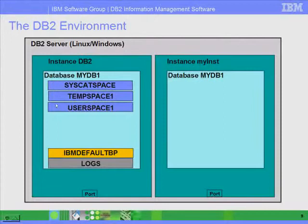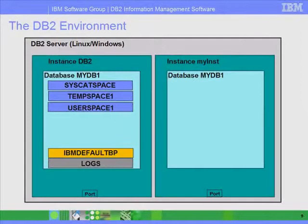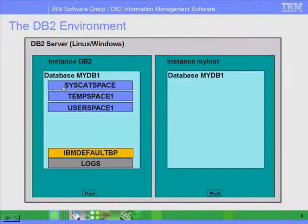There are three table spaces created by default. The first one is called SYSCATSPACE. This table space is used to store the catalog, also known as the dictionary or metadata — meaning data about data. It contains tables that store information like how many columns there are on all the tables, how many views there are, what type of indices there are, et cetera. Every object that starts with SYS is normally something that DB2 has created — it's a system object. Therefore, you should not manipulate these objects because you may corrupt the database.